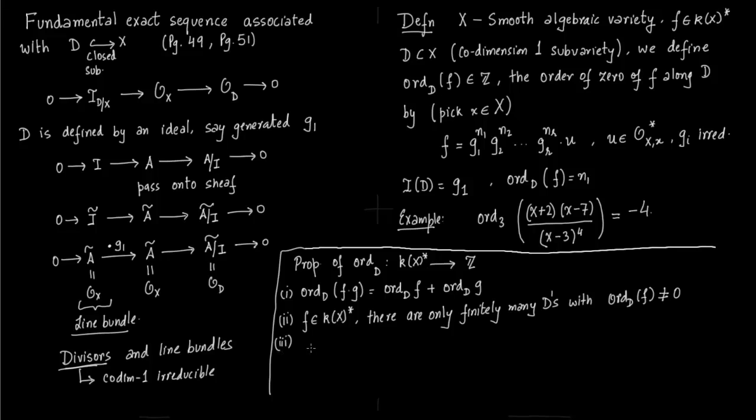So most of them will have order as 0. This order ord_D(f) is greater than or equal to 0 if and only if f is an element of O(D). Obviously, if it's an element of O(D), on the global space it will be greater than or equal to 0.